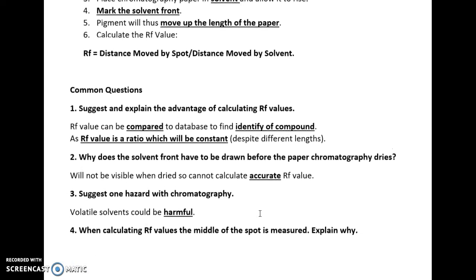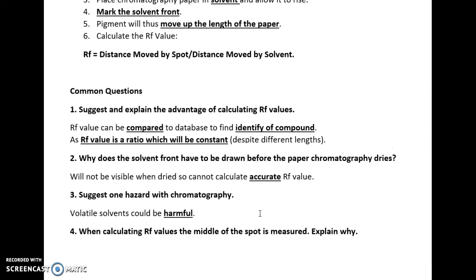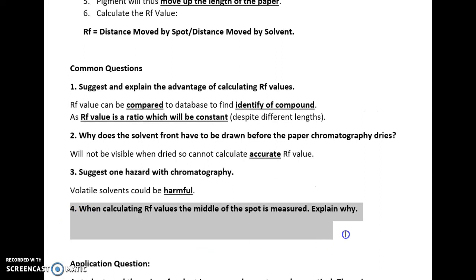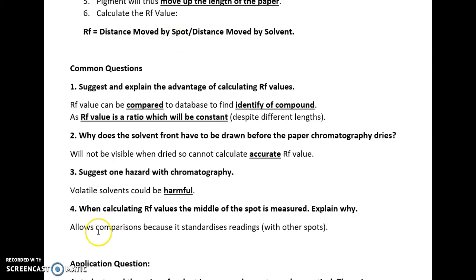When calculating RF values, the middle of the spot is measured. Explain why. It allows for comparisons because it standardizes the readings. If we want to look at several different leaves and the different components in them, we need to measure the middle of the spot on the baseline to compare and have a more accurate result.